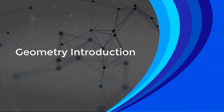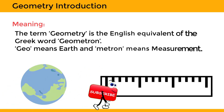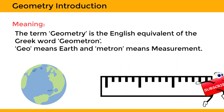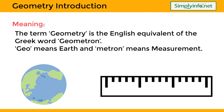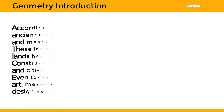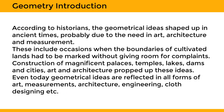The term geometry is the English equivalent of the Greek word 'geometron'. Geo means earth and metron means measurement. According to historians, geometrical ideas shaped up in ancient times, probably due to the need in art, architecture, and measurement.